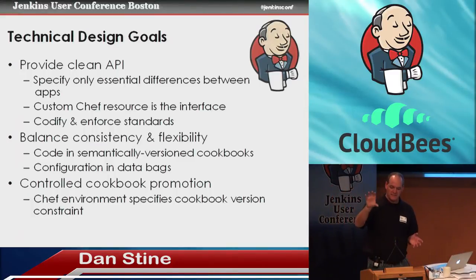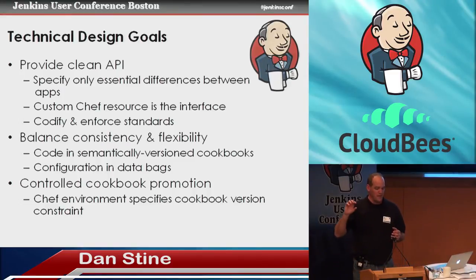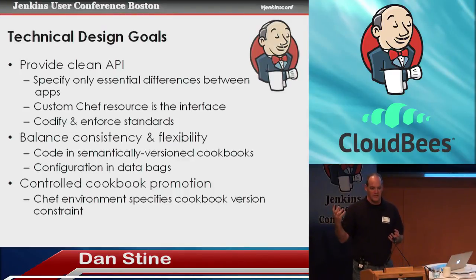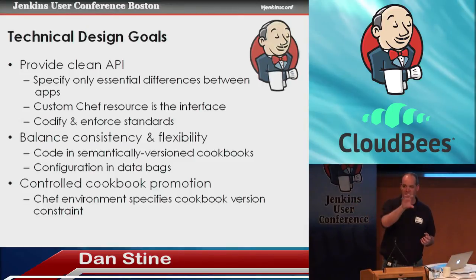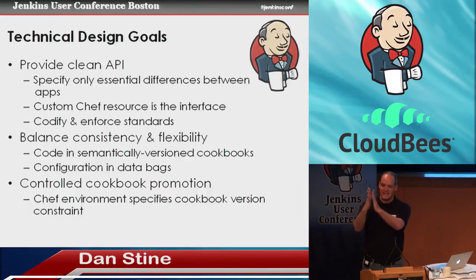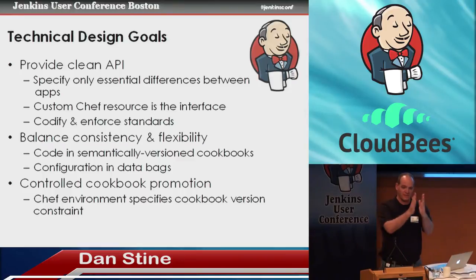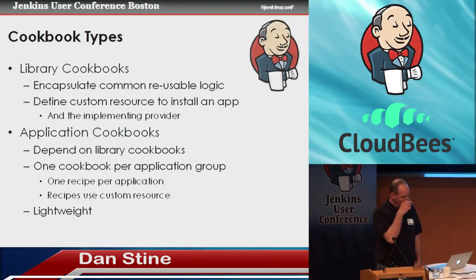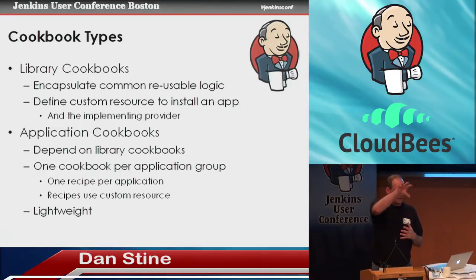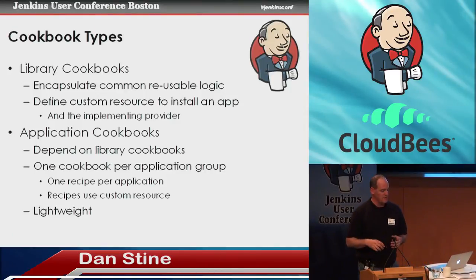As applications move down the pipeline from dev to test to production, the cookbooks need to move along too in a controlled fashion — just like the applications do. We don't want a new version of a cookbook to suddenly take effect in production; we want to test it in dev and in the pipeline along the way. The Chef environment concept allows us to specify version constraints on cookbooks, which gates them as they move along. We end up with two basic cookbook types: library cookbooks that encapsulate common reusable logic and define the custom resource, and application cookbooks — one per application group.